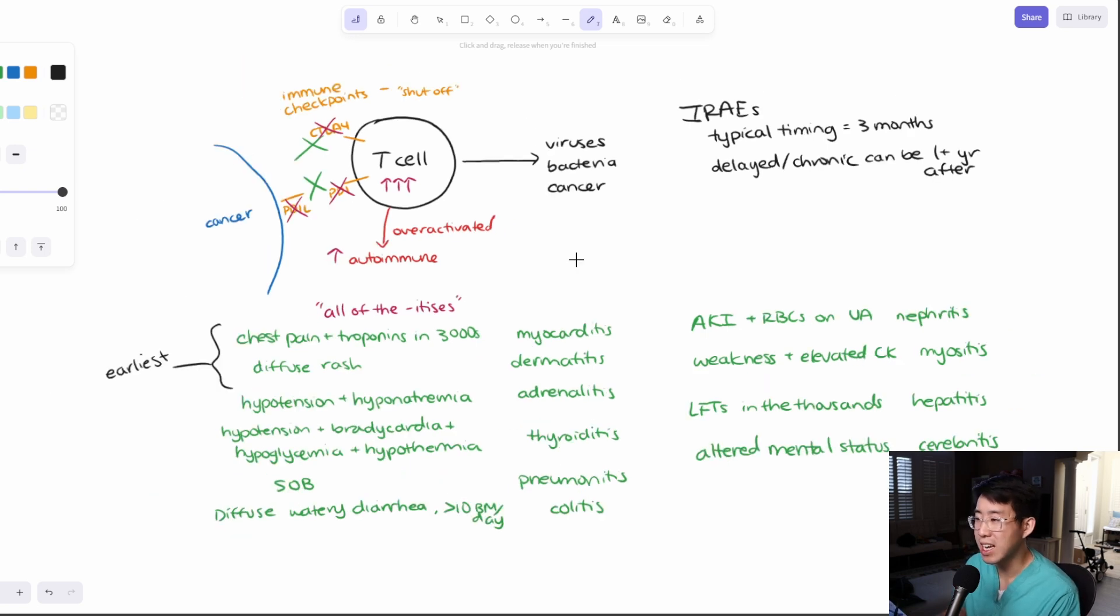And so I mentioned that the myocarditis and dermatitis tend to be the earliest. But after that, around the four week mark, you tend to see colitis. And then after six weeks, that's when you start seeing the endocrinopathies and they can be very significant.